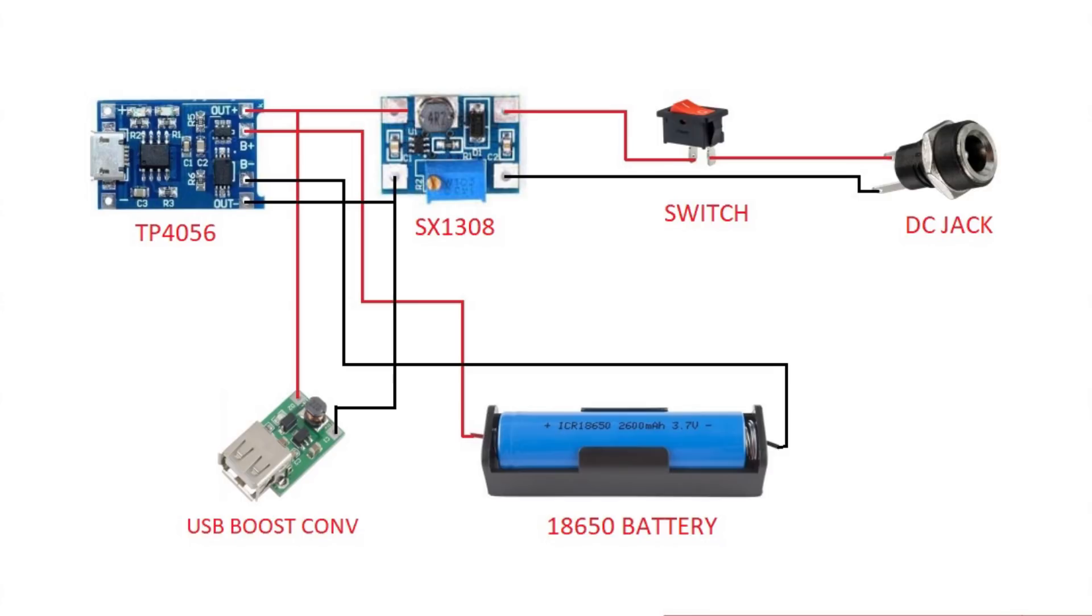The output of the 18650 battery is connected to two boost converters, one for the Wi-Fi router, another one for smartphone charging USB port.